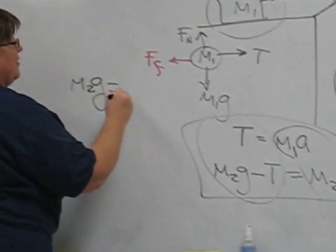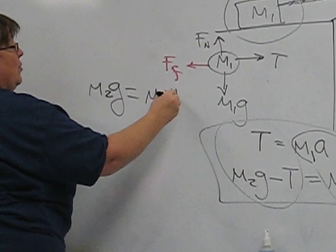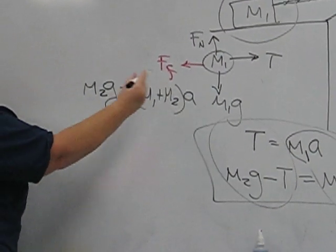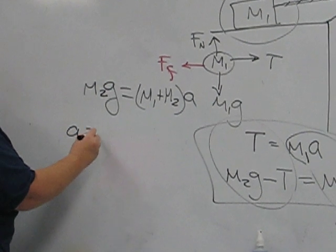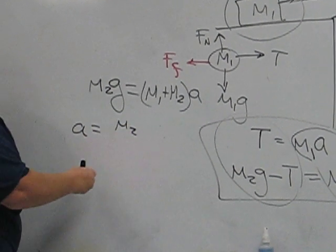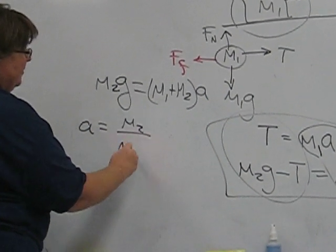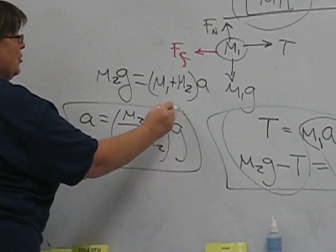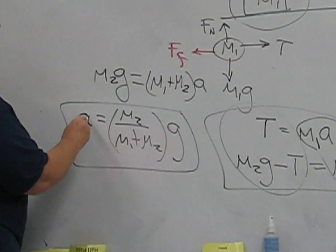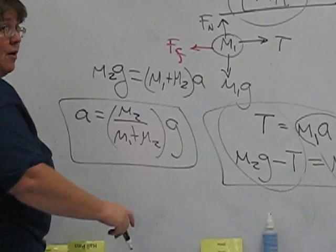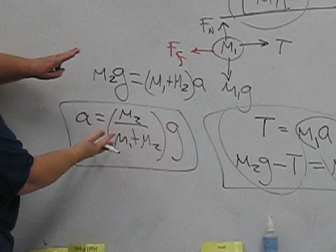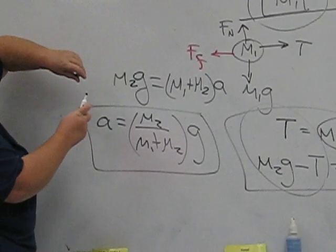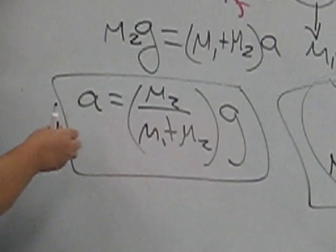And likewise, adding up the right sides of the equations, we've got the sum of the masses times acceleration. So acceleration ends up being simply this, right here. And it's nice to put it in this form. Here's the multiplier of gravity.